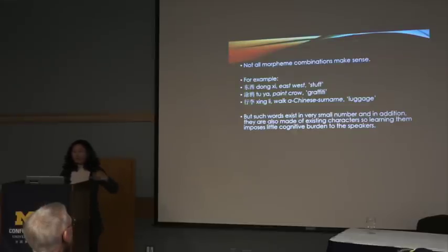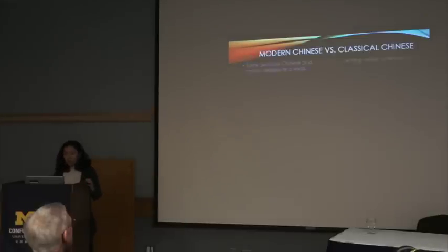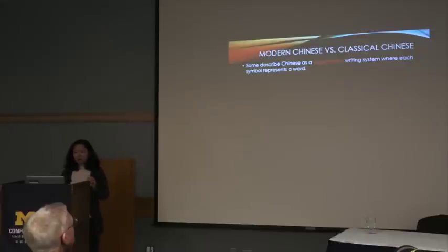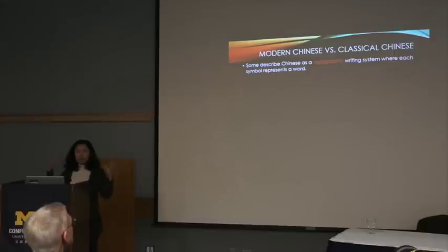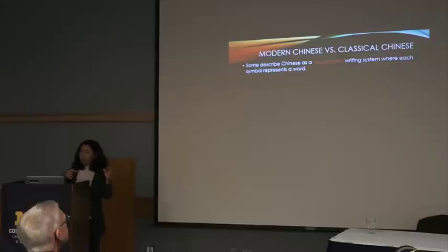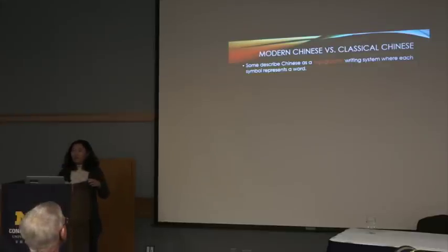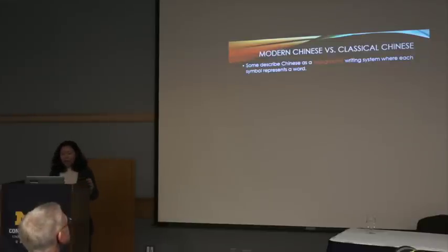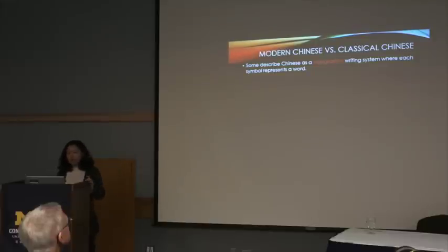Not all morpheme combinations are immediately transparent — some you just have to learn. 'Dong xi' literally means 'east-west' but strangely means 'stuff/things.' 'Tuo ya' (paint-crow) means graffiti. 'Xing li' (walk + the surname Li) means luggage — the reason isn't clear on the surface. But such opaque words exist in very small numbers, and they're still built from existing characters, so they impose little cognitive burden on native speakers.